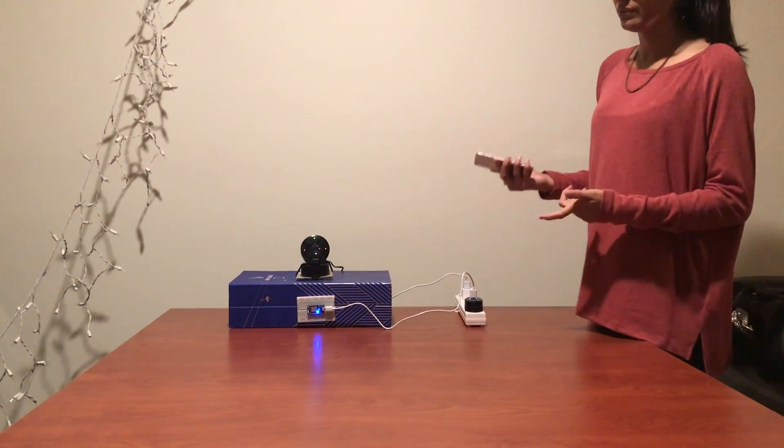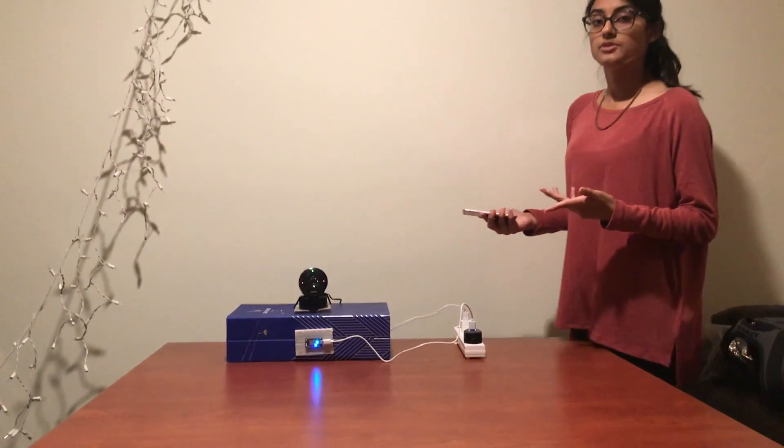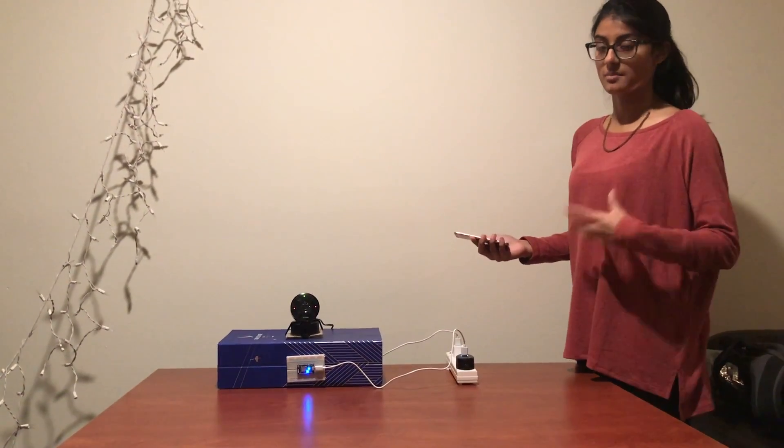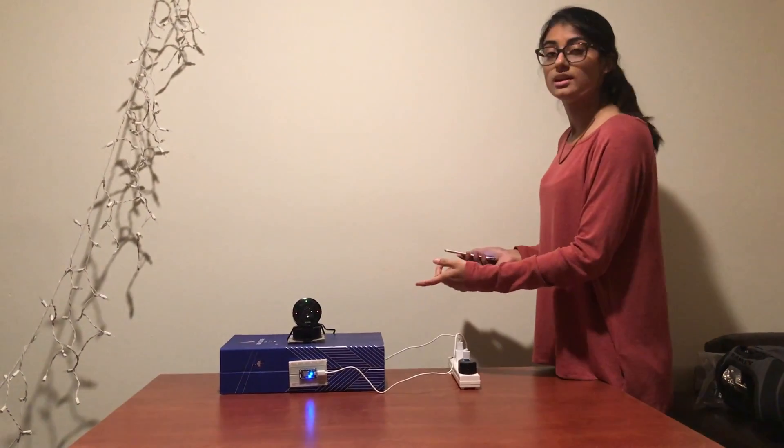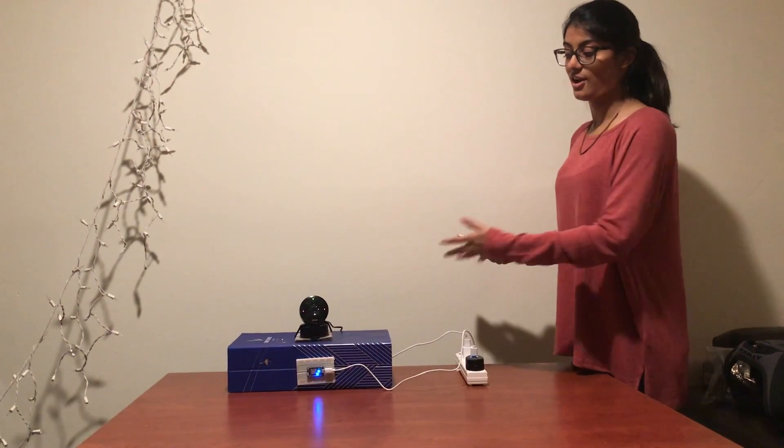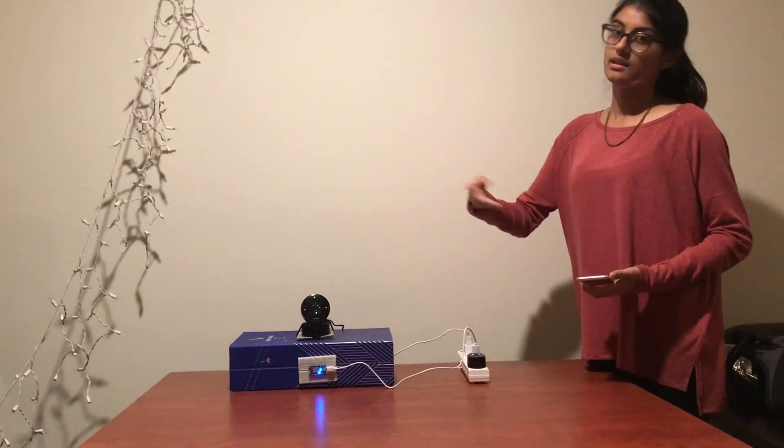So basically we have two photons. One of them shows us the signal when the camera is on and off. And the other one spins the camera left and right.